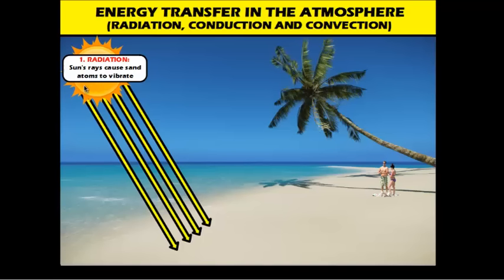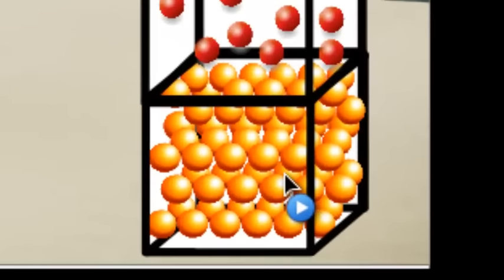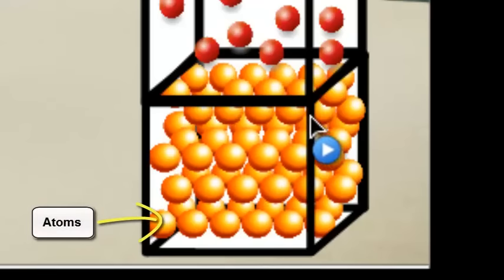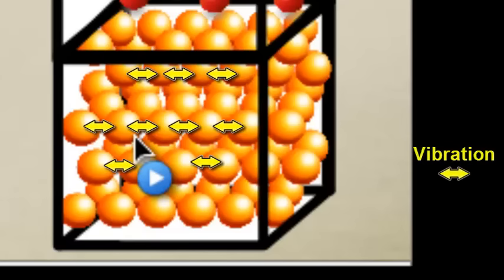Radiation warms up the sand because the Sun's rays cause the atoms in the sand to vibrate. Let's take a look at how that looks. Here we have this cube—let's pretend it's a single grain of sand. This isn't all to scale, but it's here for visual purposes so we can see what's going on. This grain of sand is made up of all these atoms, the orange circles in there. As the sunlight hits the grains of sand, they excite these atoms and these atoms start to vibrate. As they vibrate, they collide with one another, bumping into each other. You have a ton of these atoms doing that.